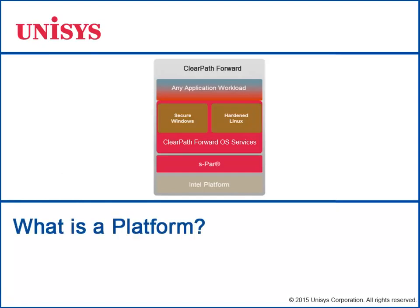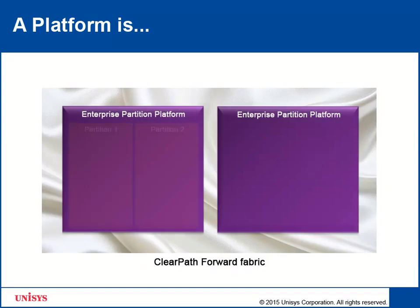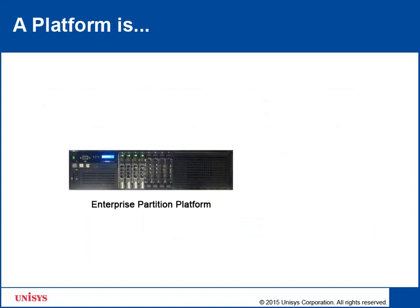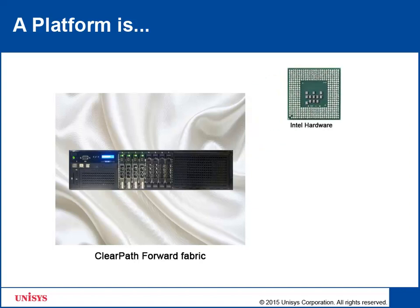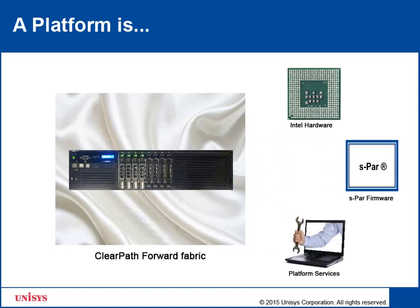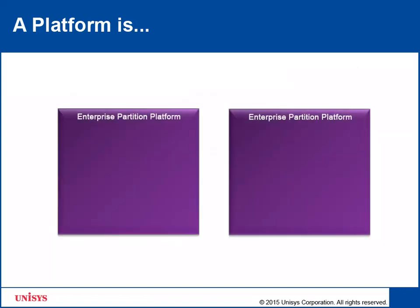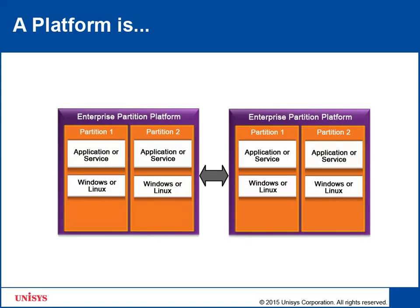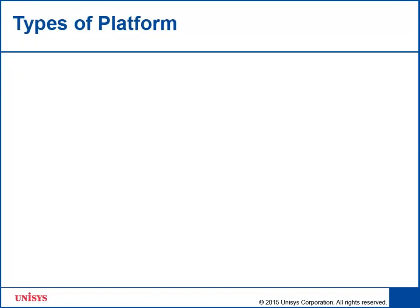Let's first understand what is a platform. The ClearPath Forward Fabric is made up of heterogeneous application execution environments consisting of platforms, secure partitions, and workloads. A platform is a computer that is the basic building block of ClearPath Forward Fabric. A platform includes Intel-based hardware, Unisys secure partitioning also known as ASPAR firmware, and a set of platform services. A platform supports the ability to run partition images that are either customer partition images or fabric services. The platforms are interconnected with hardware, software, and firmware to form a core component of the ClearPath Forward Fabric.